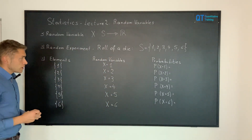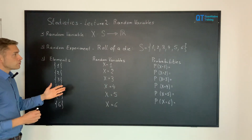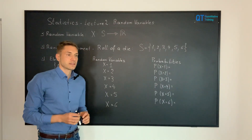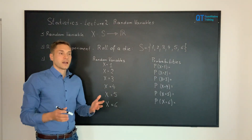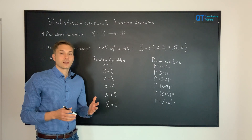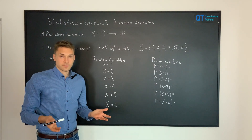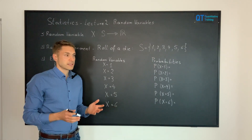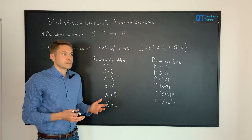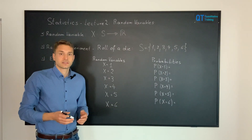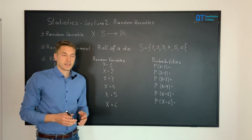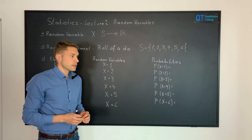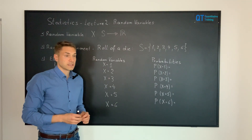We now assume that our die is fair, which means that the outcomes are equally likely to occur. So when we roll the die, the chance to get a six is the same as the chance to get a three, because we assume the die is fair.